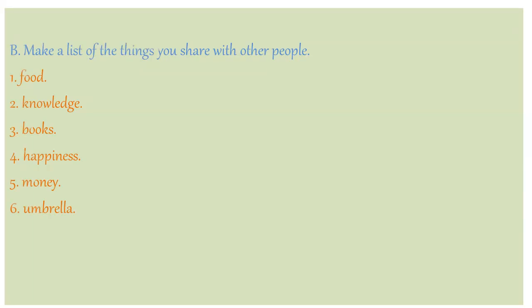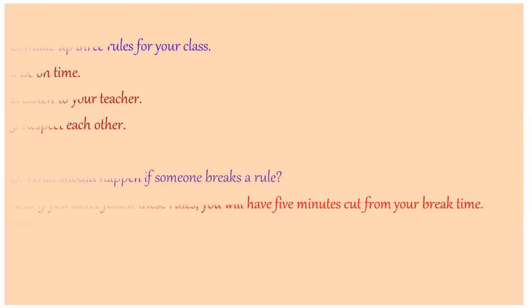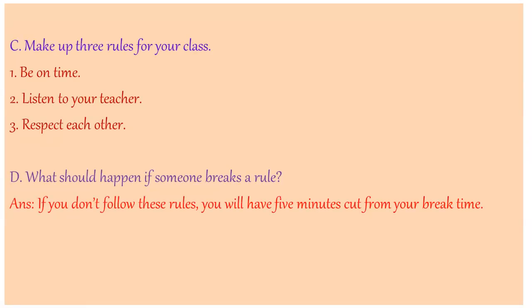In a rainy season. Part C: make up three rules for your class. Be on time, listen to your teacher, and respect each other. What should happen if someone breaks the rule? Answer: if you don't follow these rules, you'll have five minutes cut from your break time.